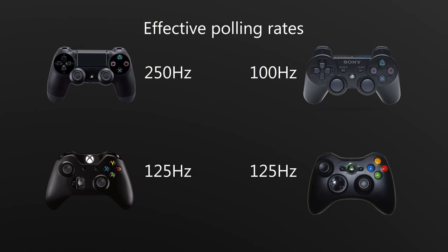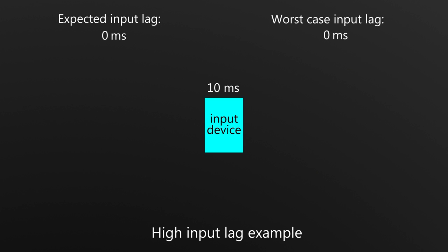First there is the input device. USB and wireless devices get polled a number of times a second, and each time they report back which buttons are pressed. Some devices poll at a rate of 100Hz, which means it could take up to 10ms for the next poll to happen after you've pressed the button. Wireless options may introduce a bit more input lag on top of that, but that's hardly significant these days.